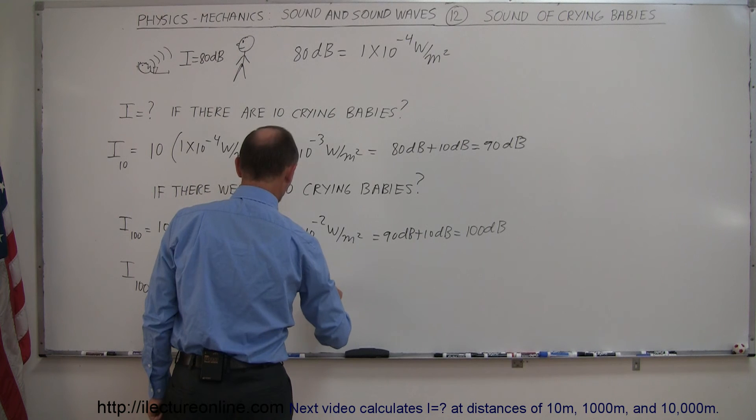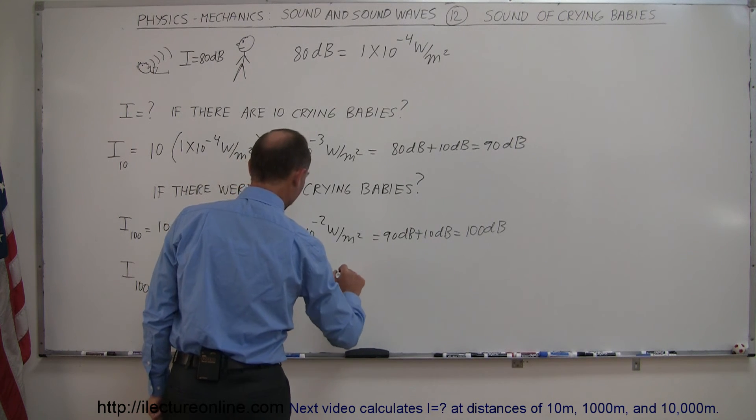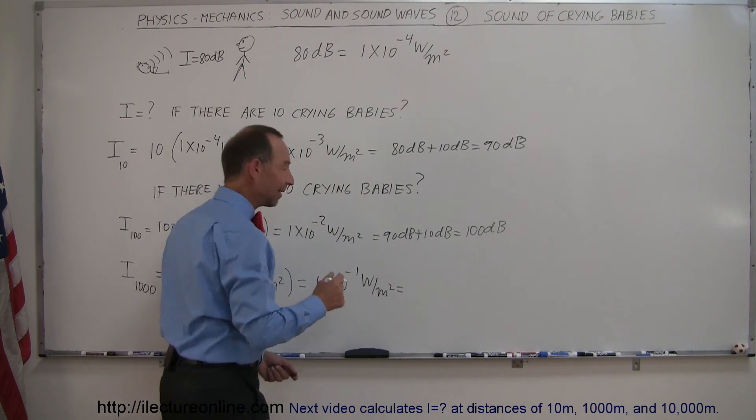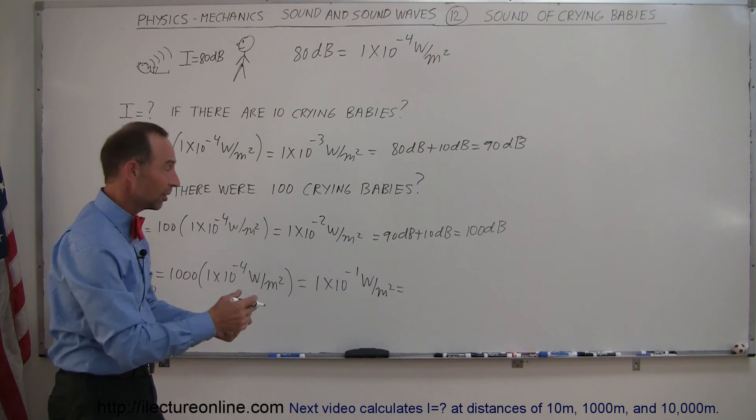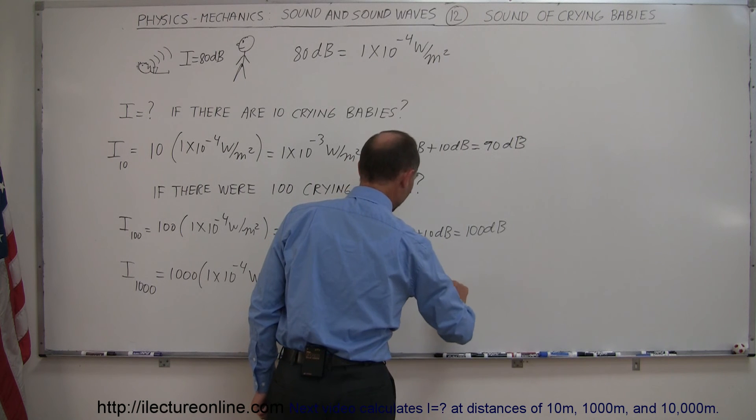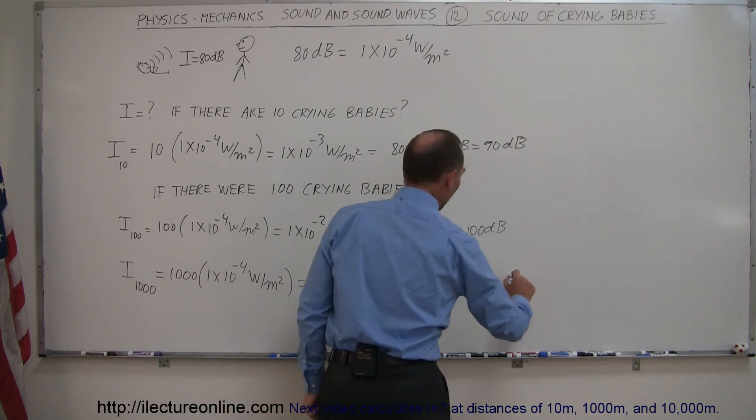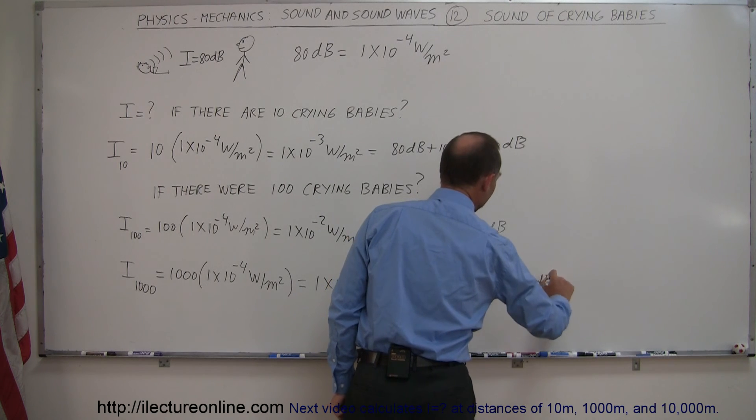This is equal to 1 times 10 to the minus 1 watt per square meter. So again that's 10 times as much as the previous time, so you add another 10 decibels. This would be 100 decibels plus another 10 decibels, so that would be 110 decibels.